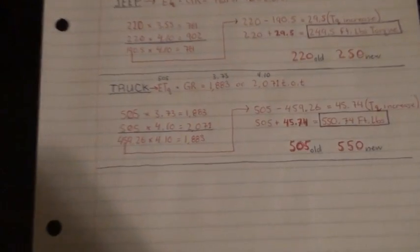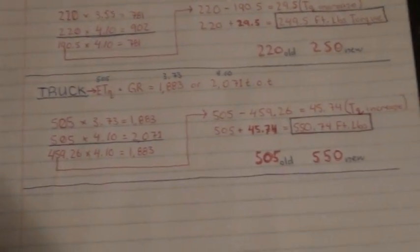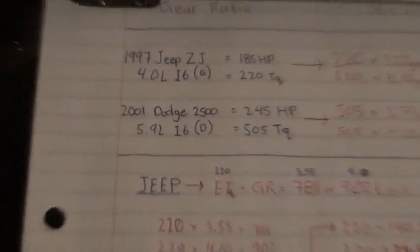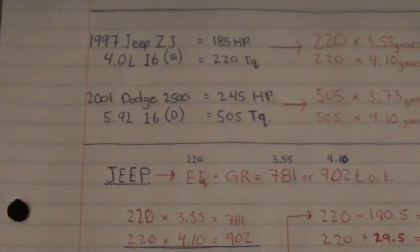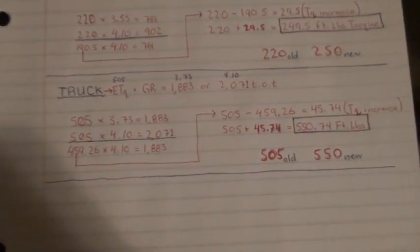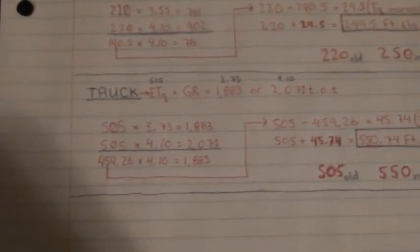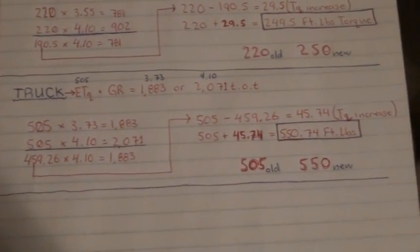That's a very quick overview of it. This one down here is for my dream truck, which is a 2001 Dodge 2500, 5.9 liter, 6 speed. This is the equation I made for that one.